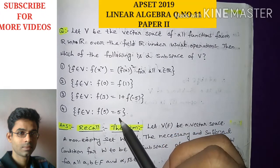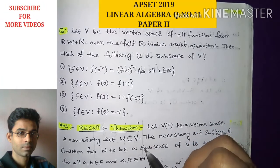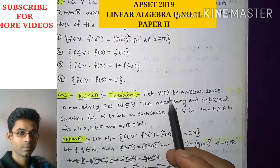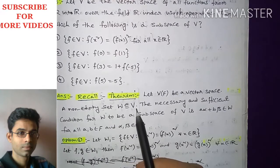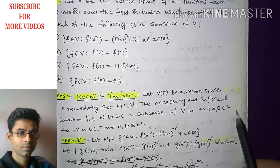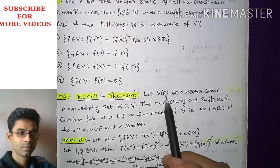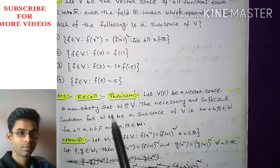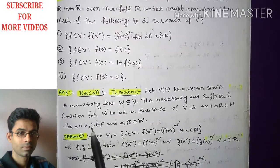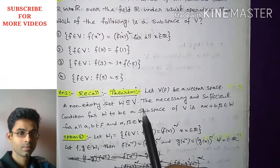We have to choose one correct option from these four. The question is about finding which of the following is a subspace of vector space V. For that we have a standard theorem — the necessary and sufficient condition. Let capital V over F be a vector space. A non-empty set W contained in V is a subspace of V if and only if: a·α + b·β belongs to W for all scalars a, b in F and vectors α, β in W.